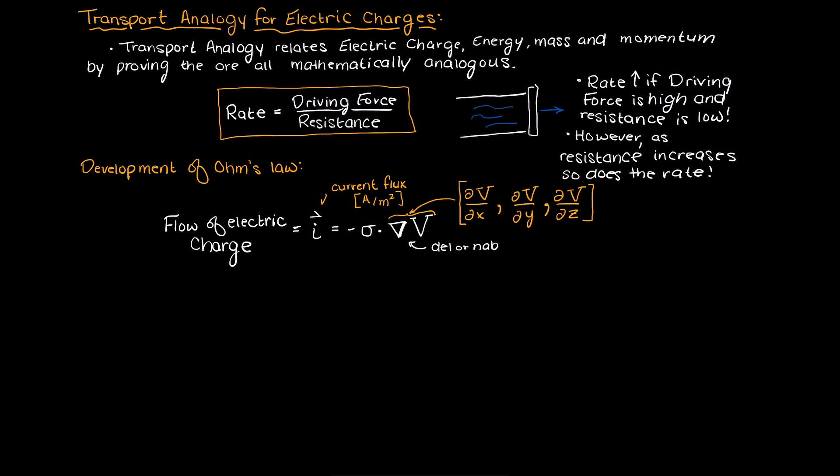However, the del or nabla term here is often used as shorthand to make your equations look much cleaner. For simplicity, let's only assume that our electrons can only flow in one direction. Because of this, the change in voltage over our change in the x direction is simply going to equal the change in voltage over the length.